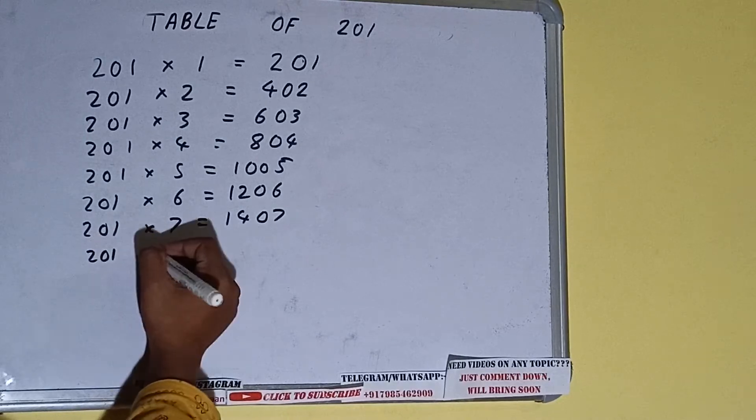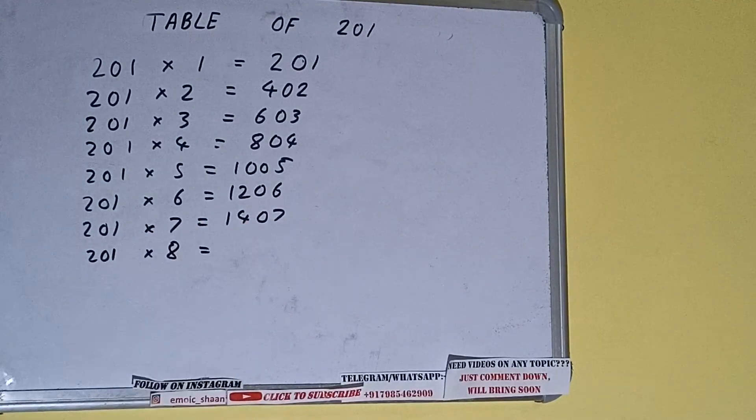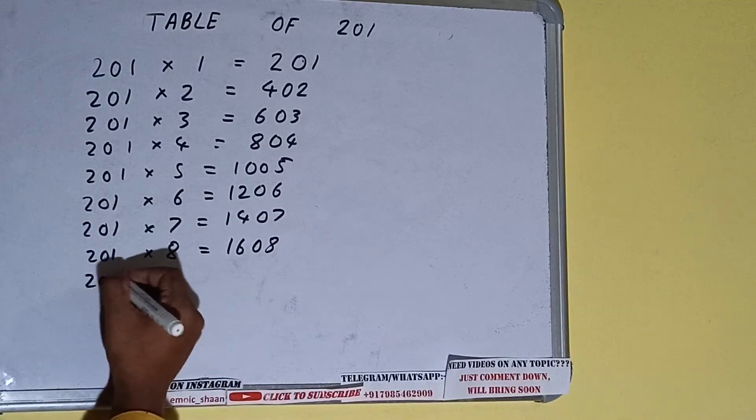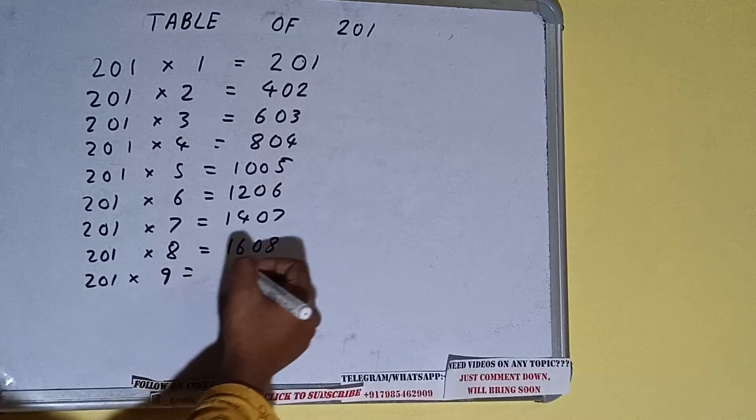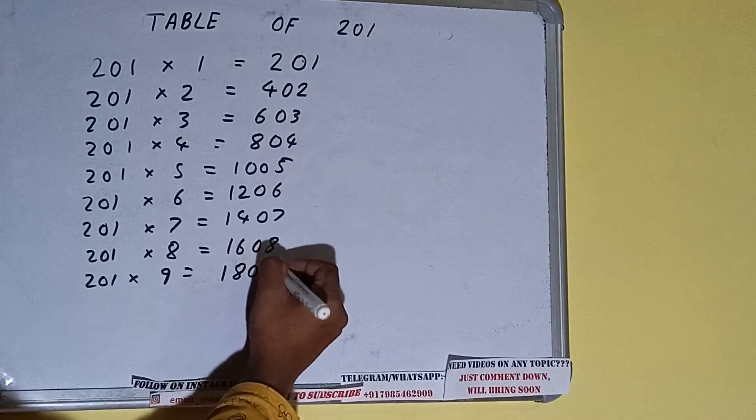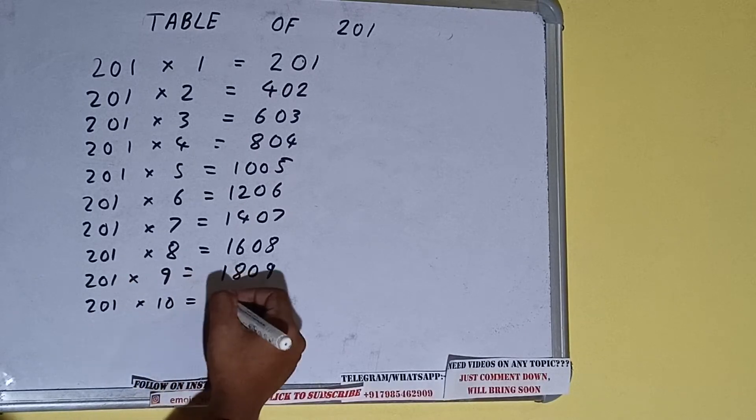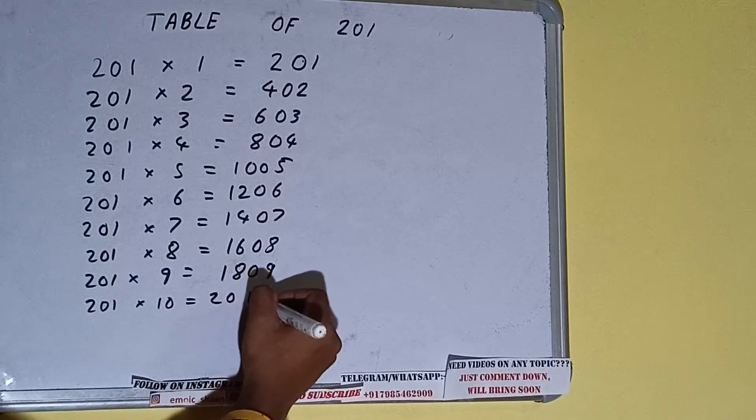201 into 8 times is 1608. 201 into 9 times is 1809, and 201 into 10 times is 2010.